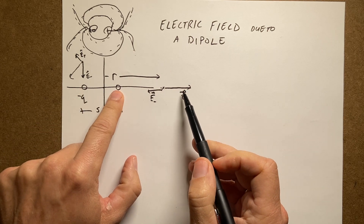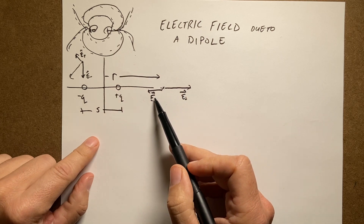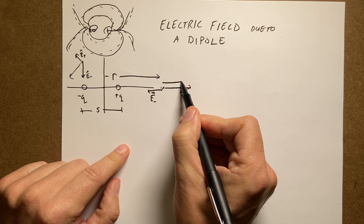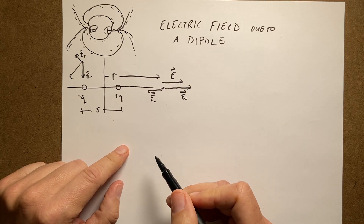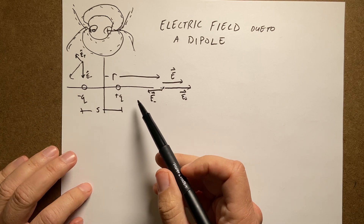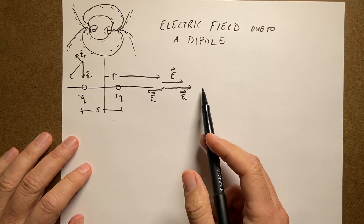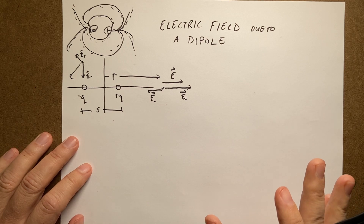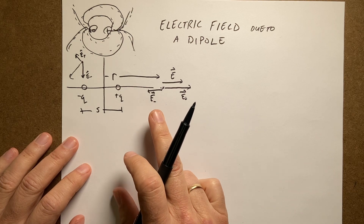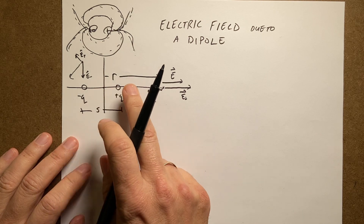Now the positive charge is closer to this point, so the magnitude of E positive is going to be greater than the magnitude of E negative. So overall the total electric field will be in the x direction. I don't really have to deal with this as a vector equation — I can write this as a one-dimensional equation, which makes our calculation a little bit easier. So let's write the expression for the electric field in the x direction due to this dipole a distance r away.